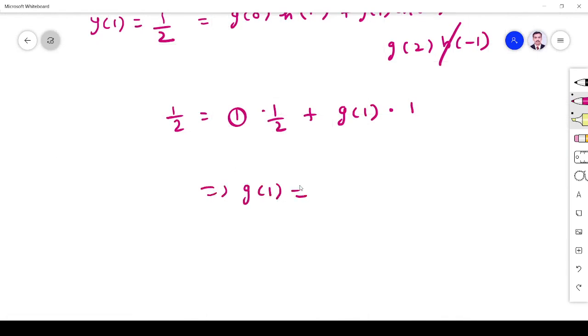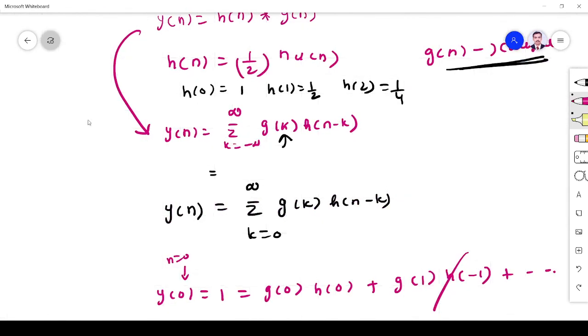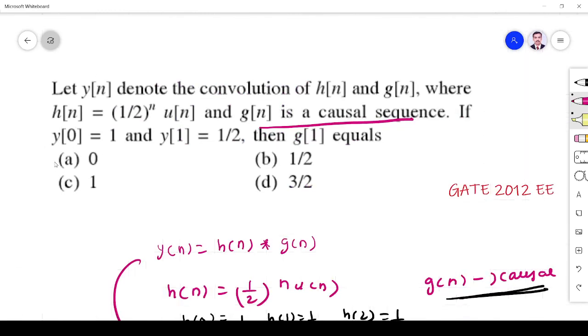g 1 is equal to... g 1 is equal to 0. So the answer is 0. Yes, option A is right. Thank you.